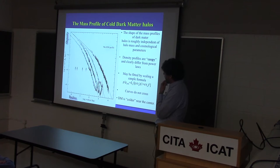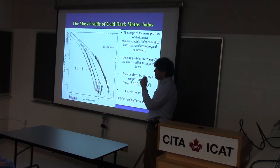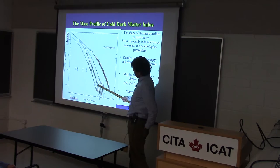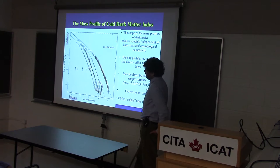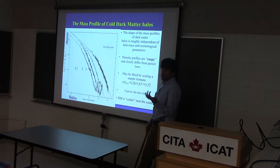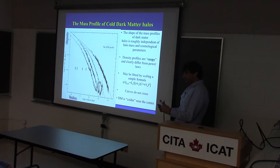This is the Navarro-Frank-White profile. You take any of those halos, find the center — the densest region — and plot the density averaged in spherical shells as a function of radius, log-log, for halos spanning 10^10 to 10^15 solar masses — five decades in mass. To a good degree, this is described very well by a simple formula. If you take this one and shift it down and to the right, it lies on top of the other. Two dark matter halos, scaled properly, look the same.